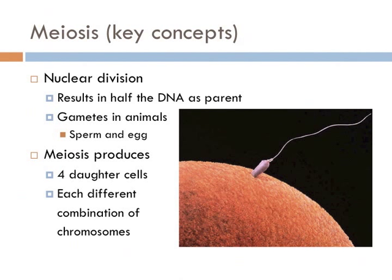And this process is how sexual reproduction occurs. It's how the gametes of organisms are created. From a single cell, meiosis produces four daughter cells, each with half of the DNA. But each has a different combination of chromosomes.